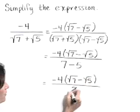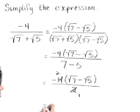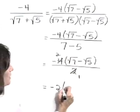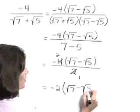Now let's cancel common factors. 2 goes into itself once, into 4 twice. So let's write this simplified form for the expression as negative 2 times the square root of 7 minus the square root of 5.